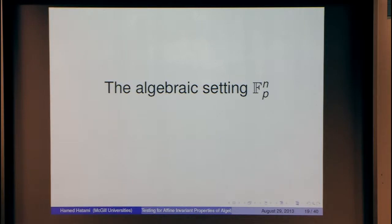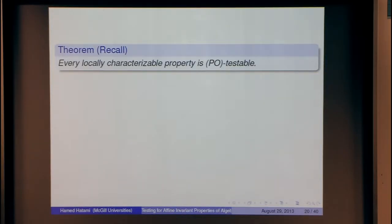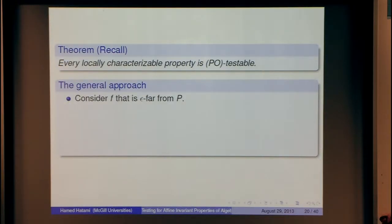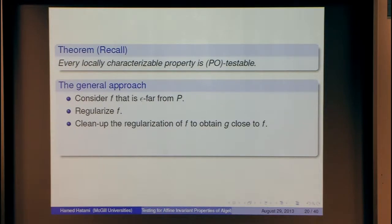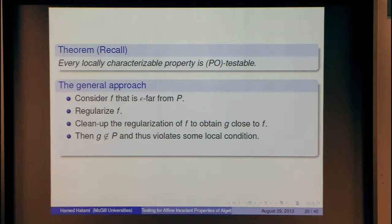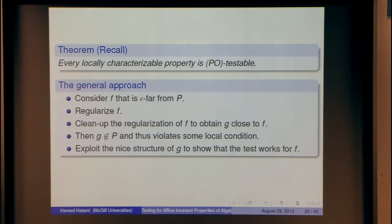There is a way to modify the big graph using these small representative cells: if you find an induced subgraph pattern in the modified coarse graph, you can look at the small uniform sub-cells to find many copies in the original graph. The same general steps apply in the algebraic setting: start from f far from property P, regularize it, apply a cleanup to get G close to f, then G violates some local constraint, and using the structure of G show that f also violates many copies of that local constraint.